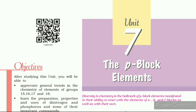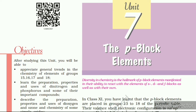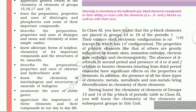Unit 7: p-block elements. Diversity in chemistry is the hallmark of the p-block elements, manifested in the ability to react with the elements of s, d, and f blocks as well as with their own. In Class 11 you have learned that p-block elements are placed in Group 13 to 18 of the periodic table. Their valence shell electronic configuration is ns² np¹⁻⁶. The properties of p-block elements, like that of others, are greatly influenced by atomic sizes, ionization enthalpy, electron gain enthalpy, and electronegativity.